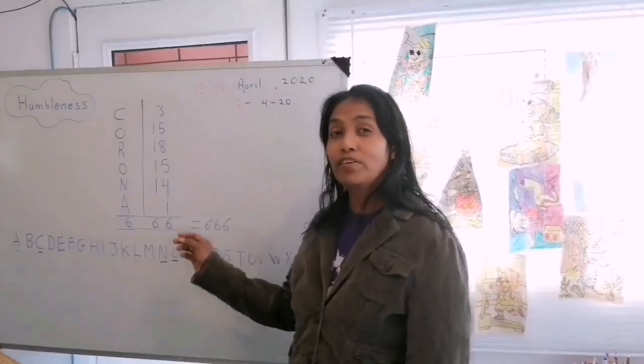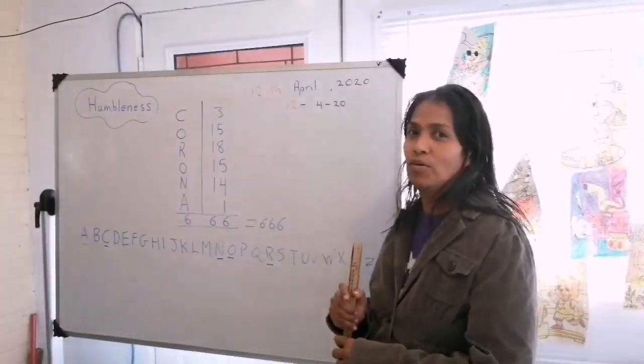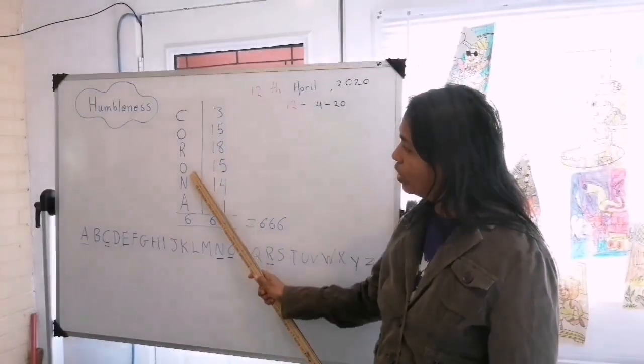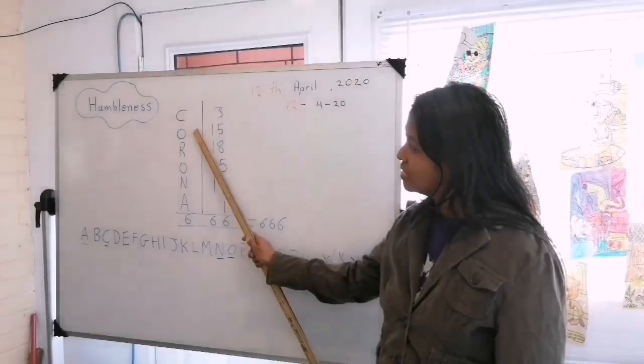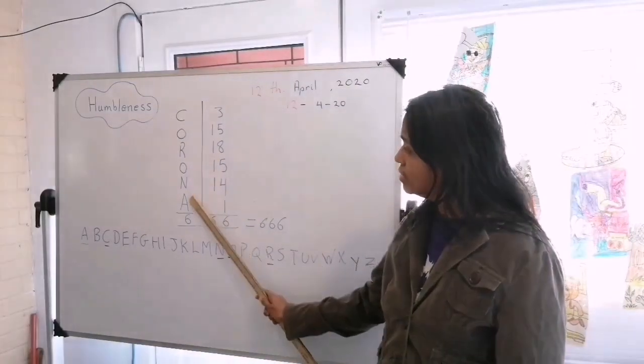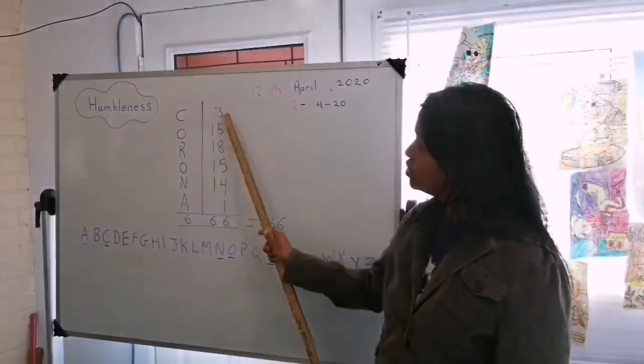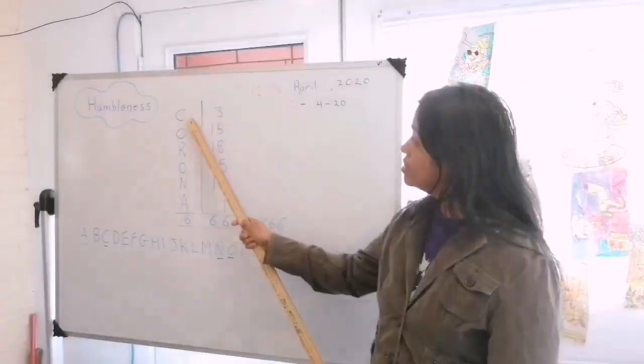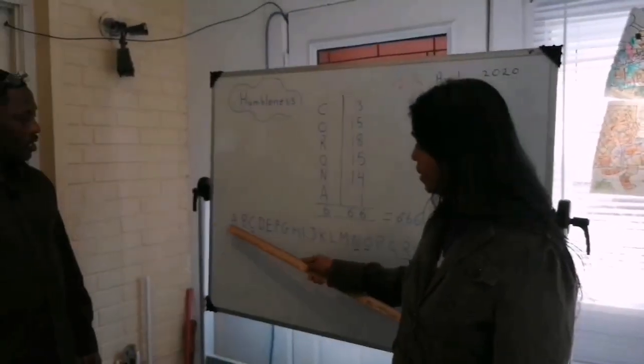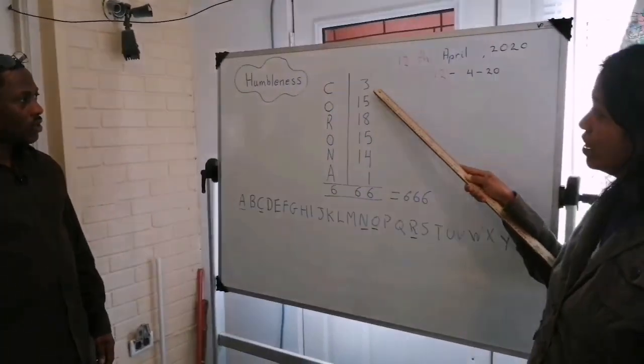Some of you probably have seen this already, but I just want to expand on this a little more. Now the word Corona, C-O-R-O-N-A. You'll notice it is six letters that make up this word. So six letters, you have six here. Now, C is in the third place in the alphabet. You will notice here, A, B, C, one, two, three. C, three.